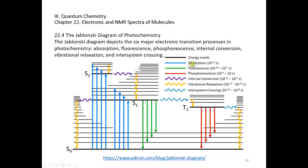Now let's look at absorption. You can see absorption represented by those up arrows. A molecule may absorb a photon and get excited to some S1 or S2 excited state. That's absorption.